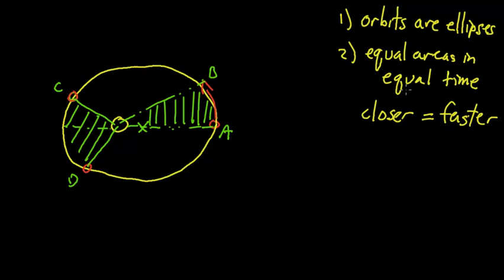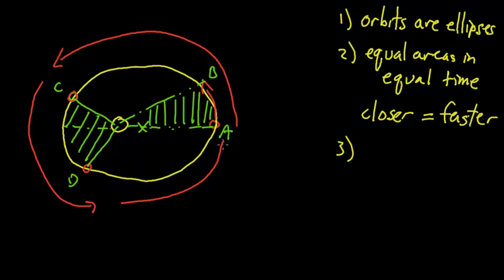Finally, his third rule, the third Kepler law, states that a relationship between the time it takes for the planet to go all the way around. So imagine it goes from point A all the way around back to point A again. And we'll call that time P, and that's what we'll call the period.